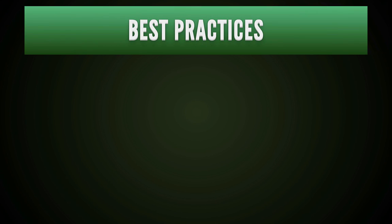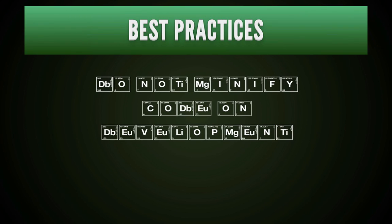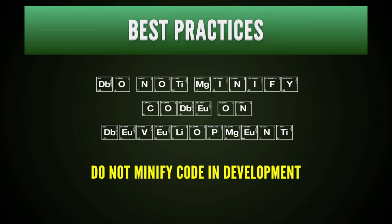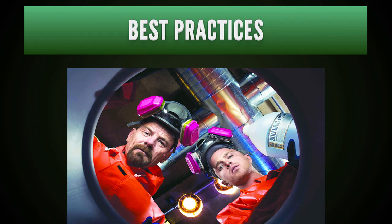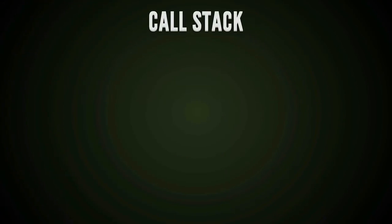Another best practice: do not minify your code during development. You always want to see meaningful code — not something like 'function a, b, z' like minified jQuery. Use descriptive, readable function names so you can understand what's going on as you debug.